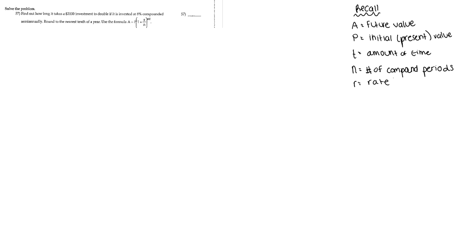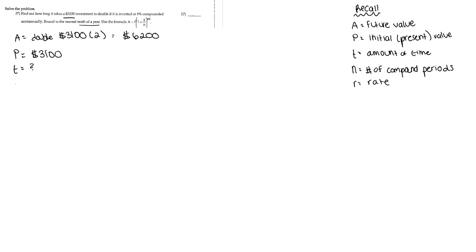Now let's find the value for each variable. A is double the initial investment, so A equals 6,200. P, our initial present value, is 3,100. T is unknown — that's what we're solving for. R, our rate, is 8%, written as the decimal 0.08. N is 2 because semi-annually means every 6 months, and 12 divided by 6 equals 2.